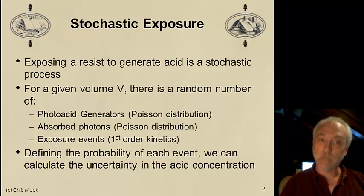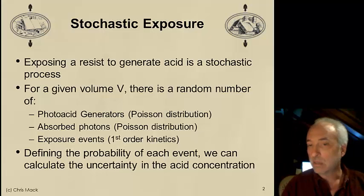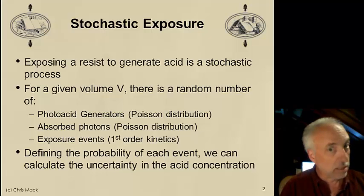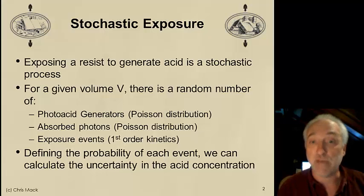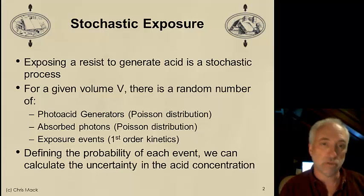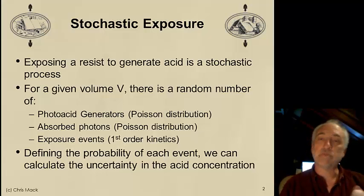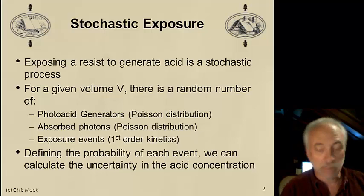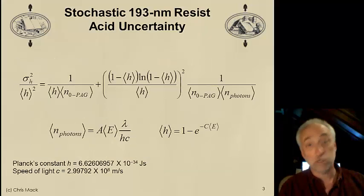On average, we know how to describe these events. We describe them with a dose, a concentration, and a kinetic reaction rate. But when we look at things probabilistically, all of those quantities simply provide a mean value for the amount of acid we'll get. There's also a probability distribution for that acid, providing an uncertainty in the amount generated. For some given volume V, we work through all the math and show you the result.